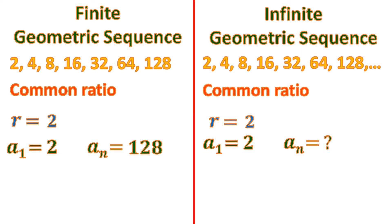As you can see, after 128 there's a comma and three dots, which means the sequence continues infinitely. It will keep on multiplying by 2, and so on — there's no ending. In the finite geometric sequence, it ends at 128. But both are still geometric sequences because they follow the same uniform pattern of multiplying by 2.